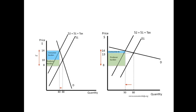Looking at the right graph, the tax burden is shared between consumers and producers. The consumer burden is represented by the area between the price they pay after tax and the price they originally paid. The producer burden is the difference between the price they received after tax and the price they originally received. When demand is inelastic, consumers pay a larger portion of the tax burden because they are less responsive to price changes. This is why understanding elasticity is important for students, business owners, and policymakers when designing taxes and understanding the impact on different stakeholders.